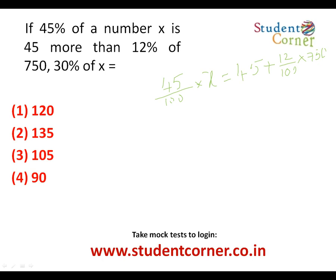Let us calculate 12% of 750. 10% of 750 is 75, so 1% is 7.5 and 2% is 15. Therefore 12% is 75 + 15 = 90. So 45% of X = 45 + 90 = 135. Since 45 × 3 = 135, we get X = 300.